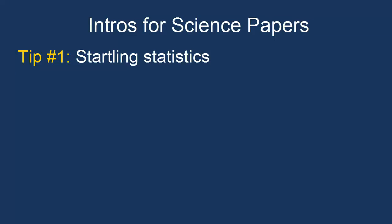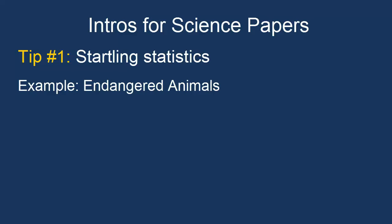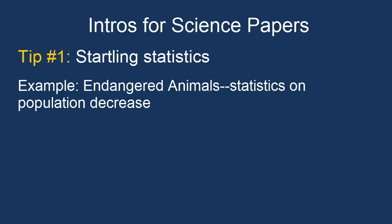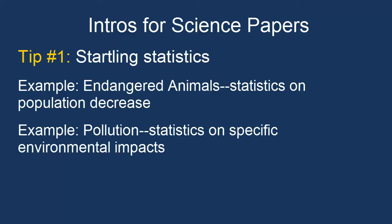However, here are some specific tips that will help you as you work on an intro for a science paper. Research for your topic may provide startling, surprising, or intriguing statistics which can make for strong opening sentences to hook your readers. For example, if you're writing a paper on an endangered animal, find a statistic that illustrates how much its population has dwindled in recent years. If you're writing a paper on an environmental problem, such as pollution, find a statistic that illustrates the specific impact of that specific kind of pollution in a concrete, quantifiable fashion.